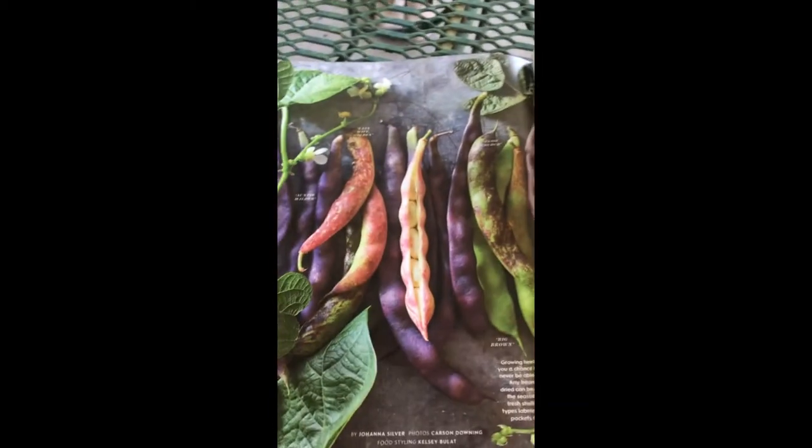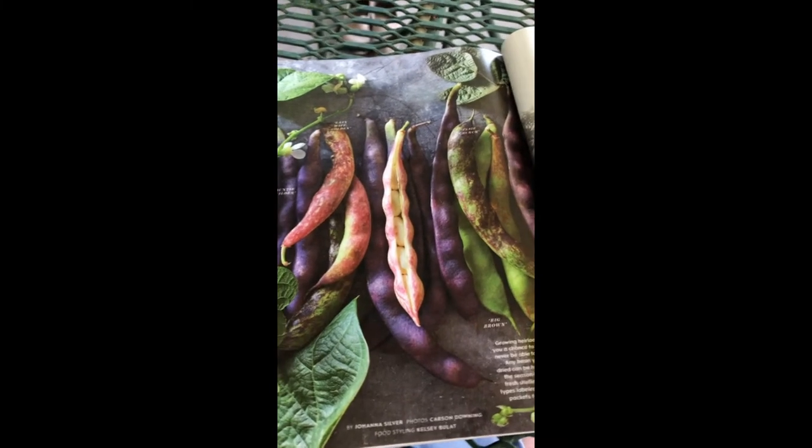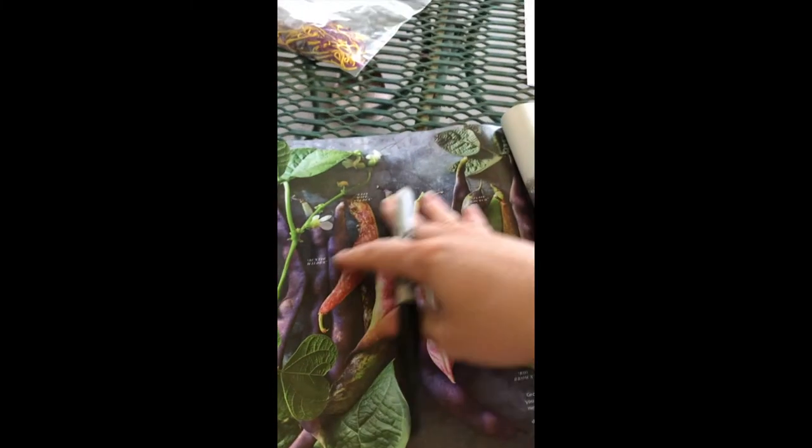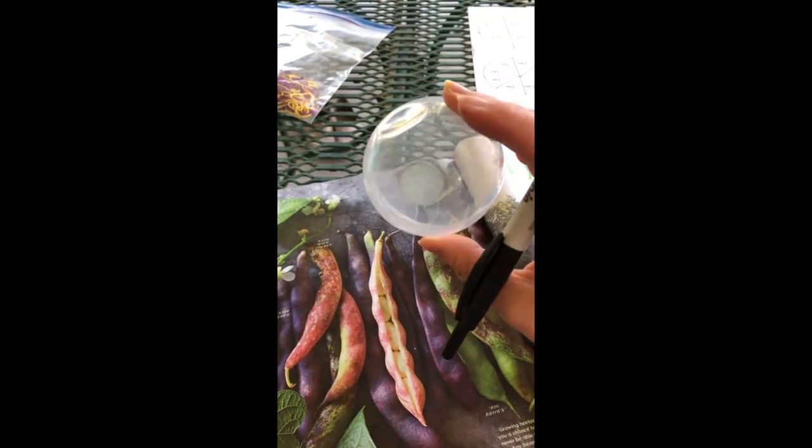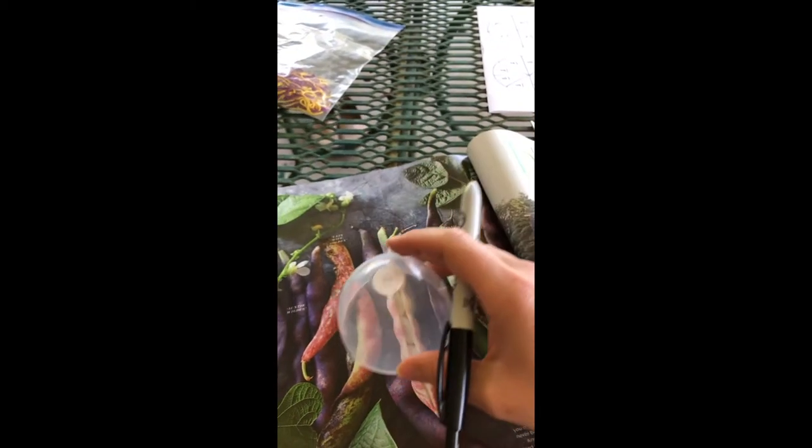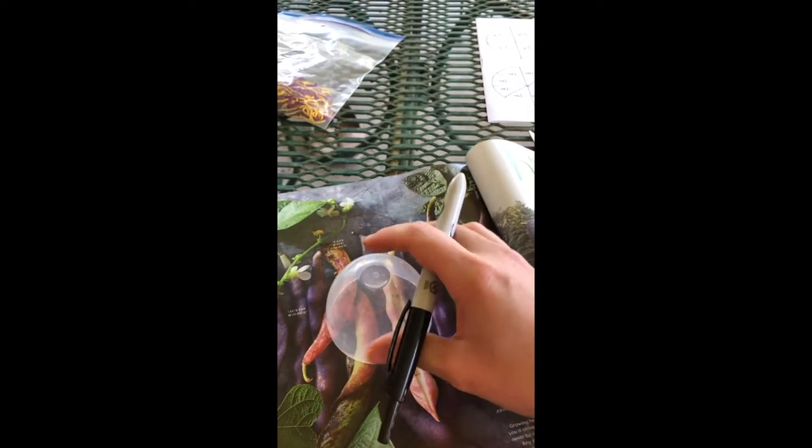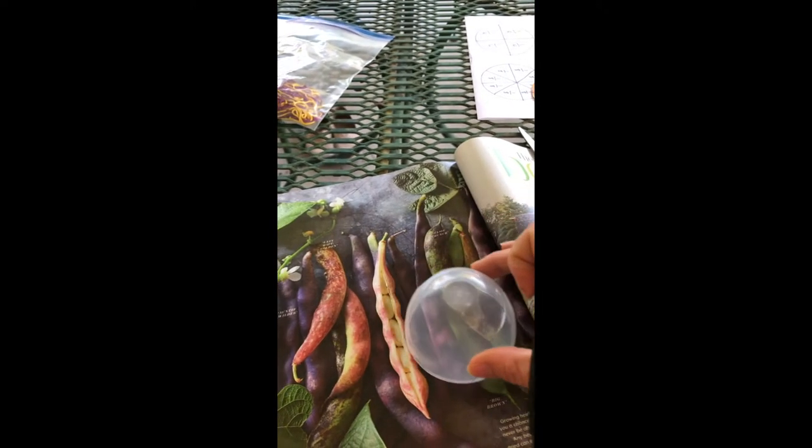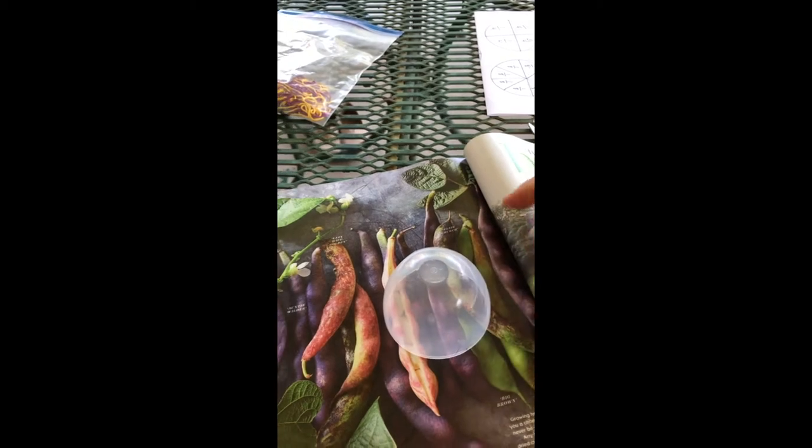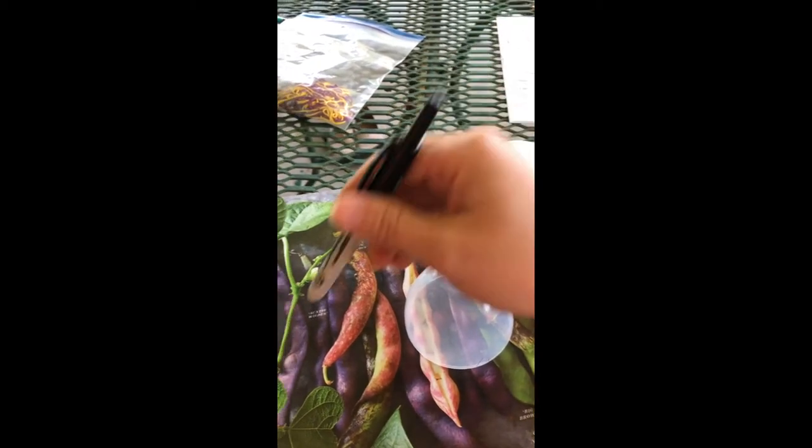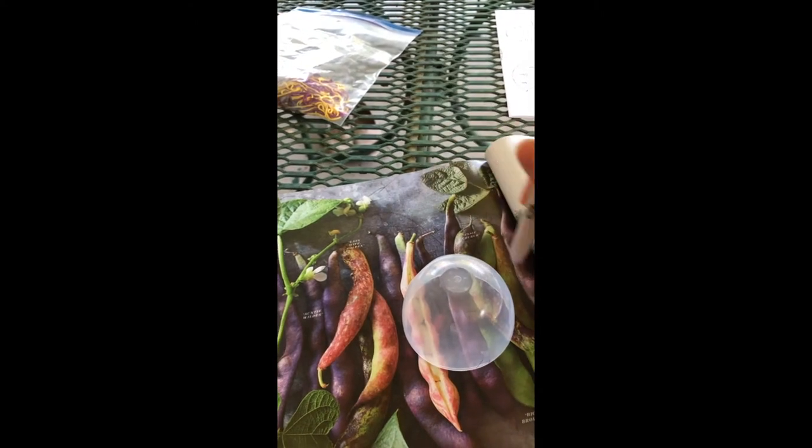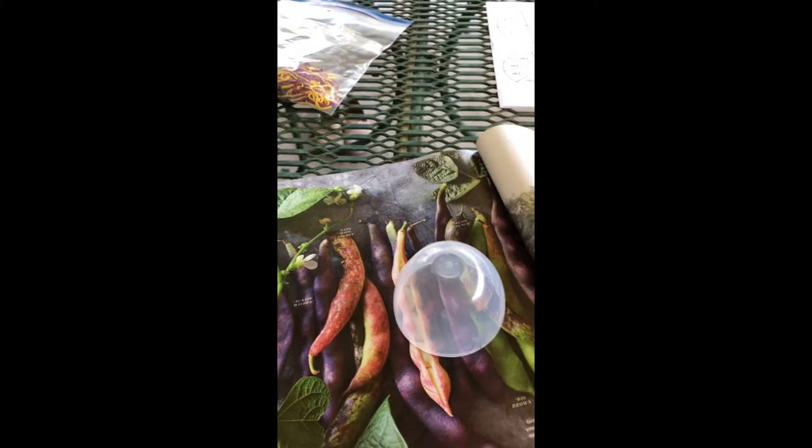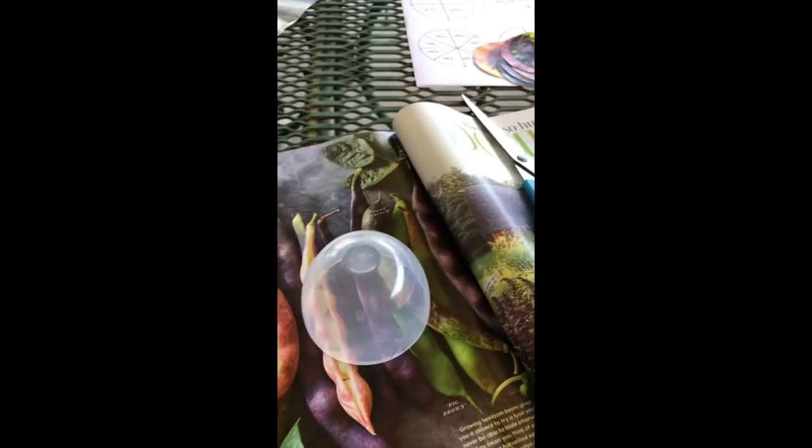For example, here we go—they have this page with all these different colored pea pods right here. So I have chosen this bottle cap as my circle template. I'm just going to lay the template where I want. I really like the colors of this one right here. I think that's a good diversity. I could probably make two on this page. Then I'm just going to use my Sharpie and I'm going to trace this circle around my template.